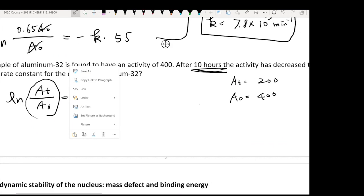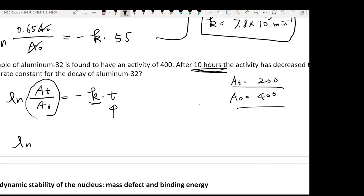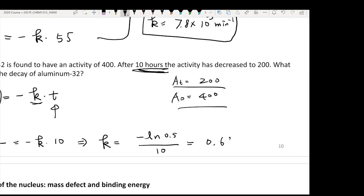Therefore, if you put these two information back, it will be natural log 200 over 400 equals negative k times your t is 10 hours. Therefore your k is going to equal negative natural log 0.5 divided by 10. You're going to get a value of 0.693 per hour.